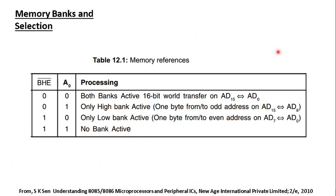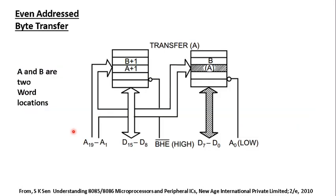A table summarizes how to choose between the two banks for byte-level and word-level data movement. For word-level movement, both BHE and A0 are set low, activating both banks. To access only the high bank, BHE is activated and A0 is set high. To access only the low bank, A0 is set low and BHE is set high. Setting both BHE and A0 high deactivates both banks.